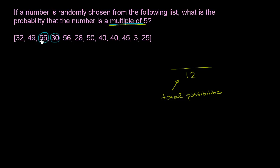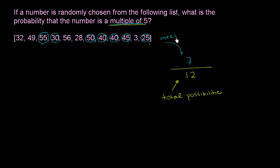30 is a multiple of 5 — that's 6 times 5. 55 is 11 times 5. Not 56, not 28. 50 is clearly 5 times 10. 40 is 8 times 5. 40 appears again, also 8 times 5. 45 — that's 9 times 5. 3 is not a multiple of 5. 25 — clearly 5 times 5. So I've circled all of the multiples of 5. Of all the possibilities, the ones that meet our constraint are 1, 2, 3, 4, 5, 6, 7 possibilities. So 7 meet our constraint, and the probability of selecting a multiple of 5 is 7 twelfths.